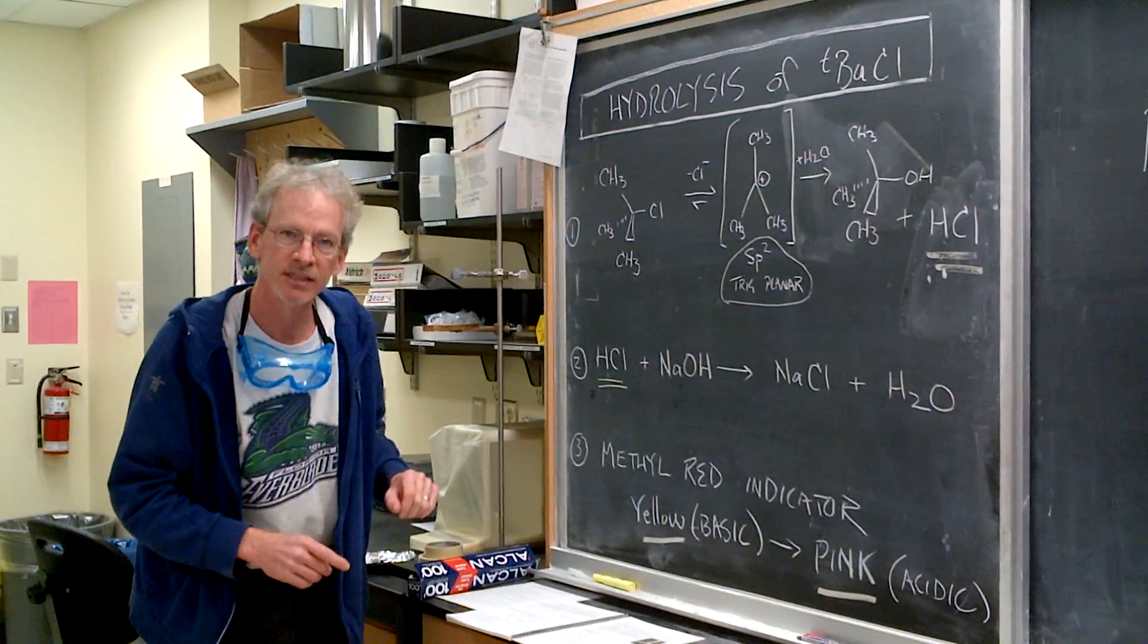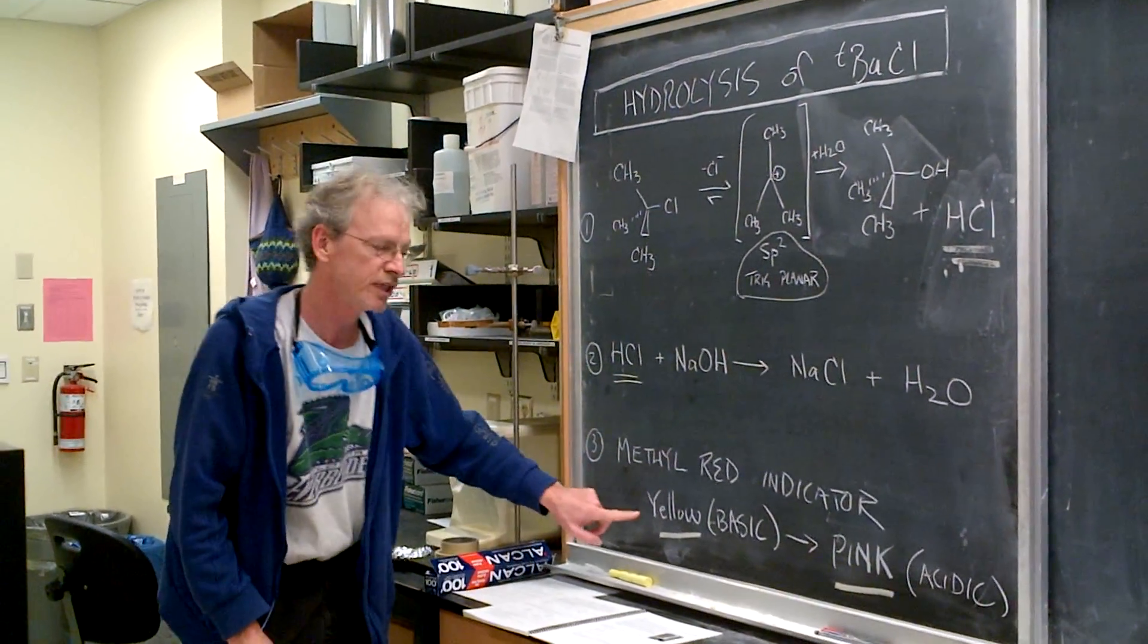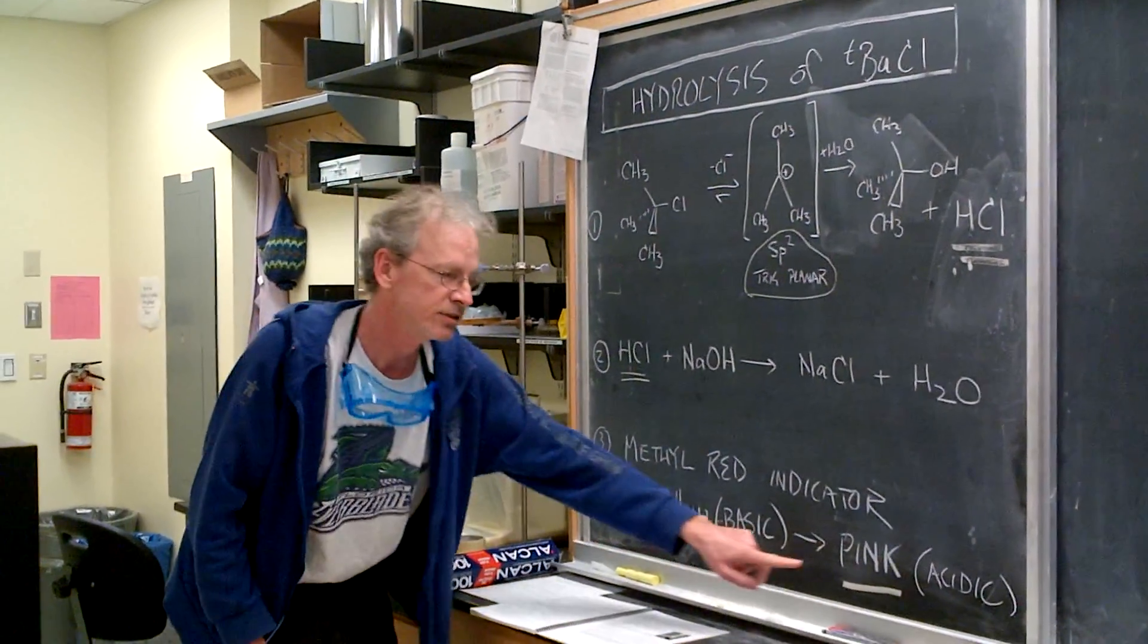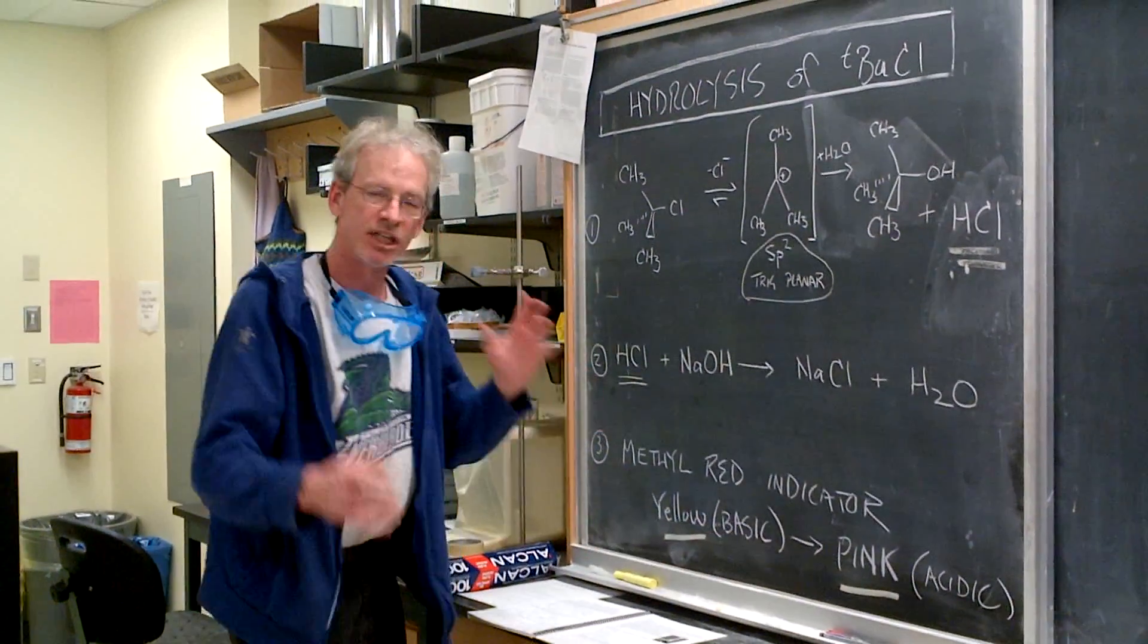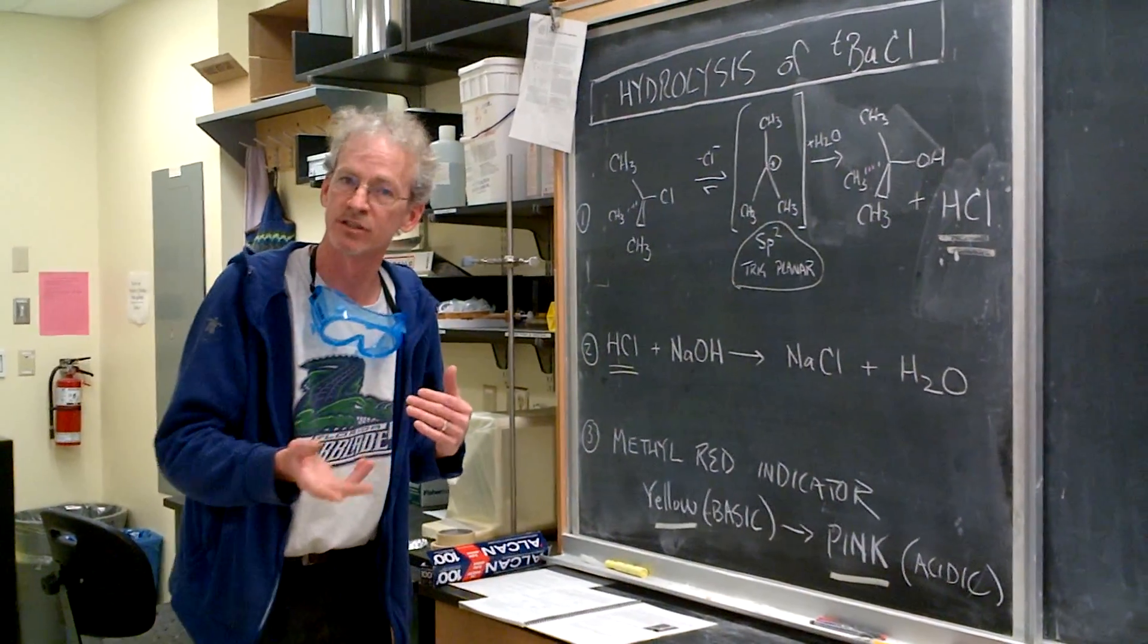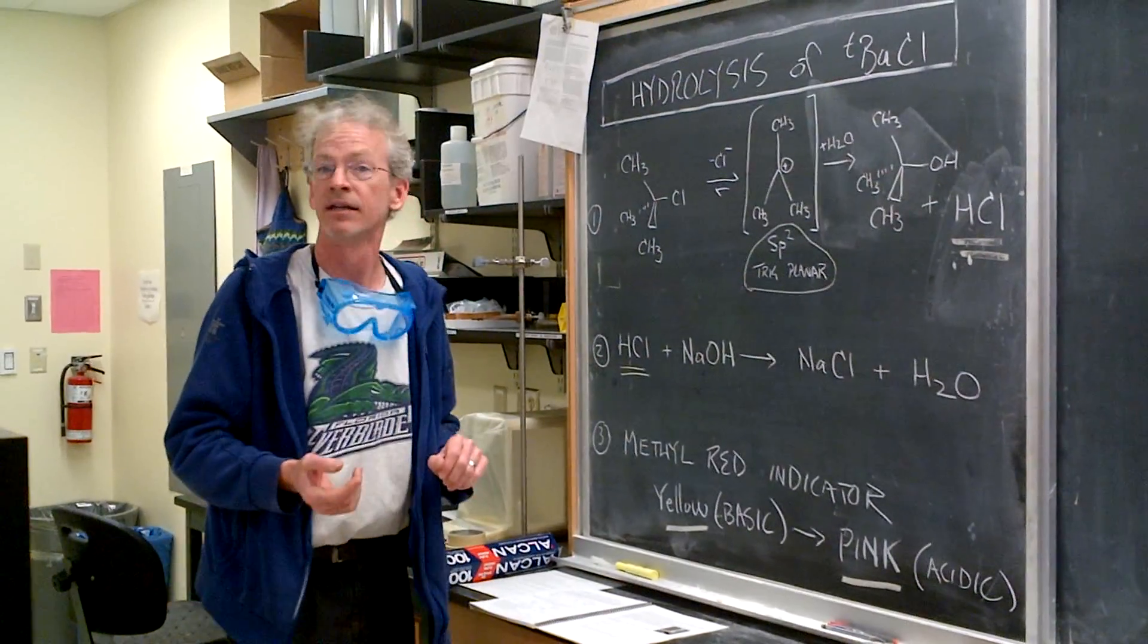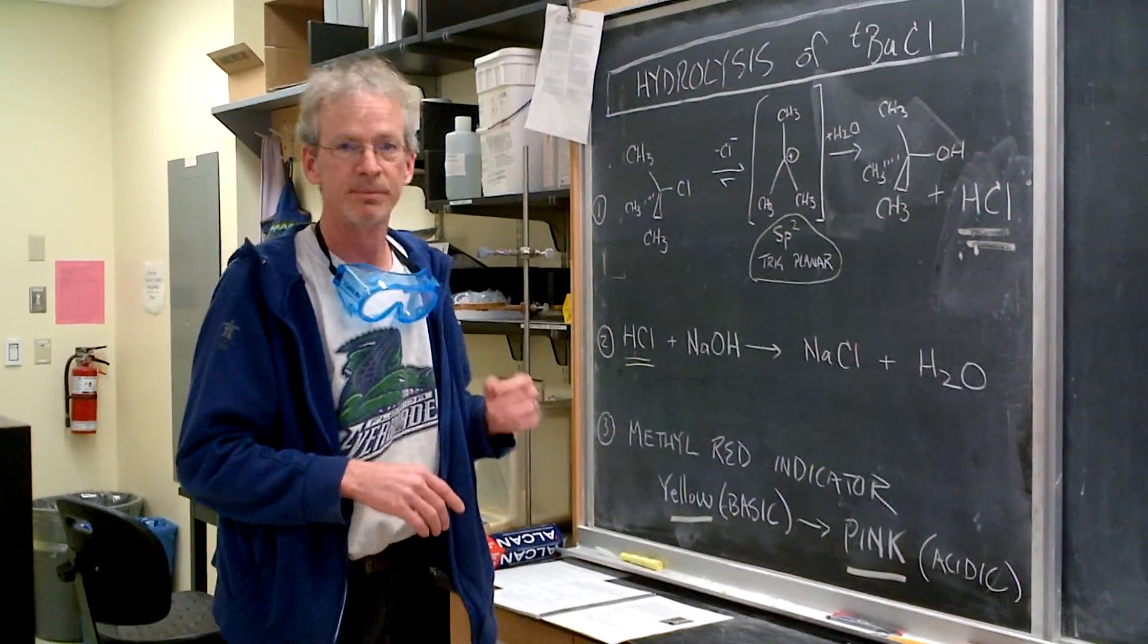When the sodium hydroxide is consumed, the methyl red indicator will change from yellow basic to pink acidic. By changing the amounts of sodium hydroxide that we add, the times for the reaction to occur and the color to change in particular gets longer.